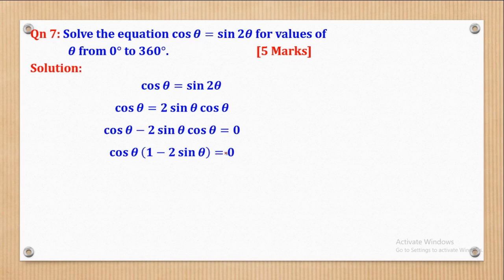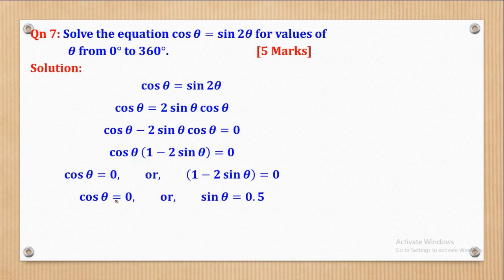Factorizing gives either cos θ = 0 or 1 − 2 sin θ = 0, which means sin θ = 0.5. If you had cancelled cos θ earlier you would not obtain the second equation and would miss some angles — so always bring everything to one side and factorize.